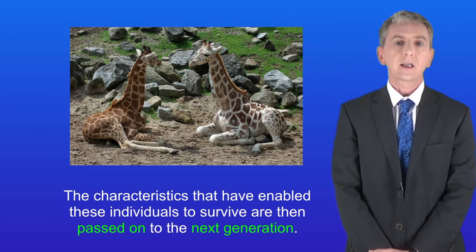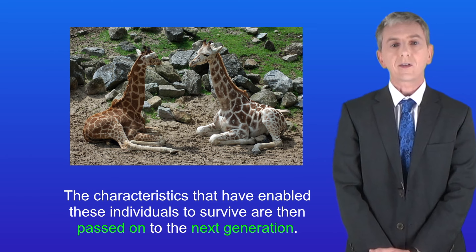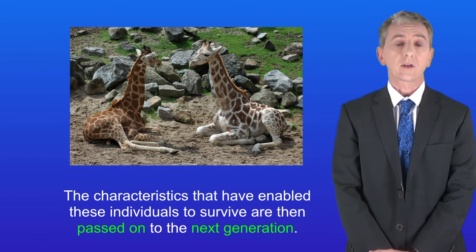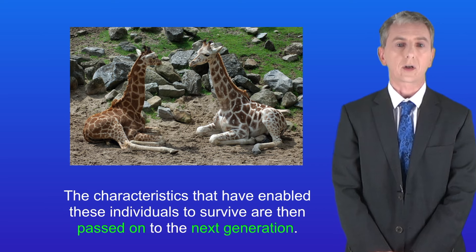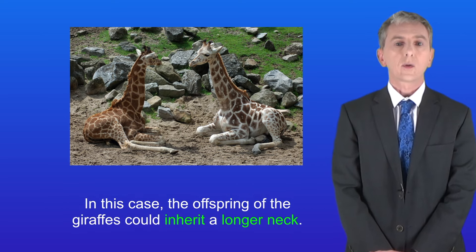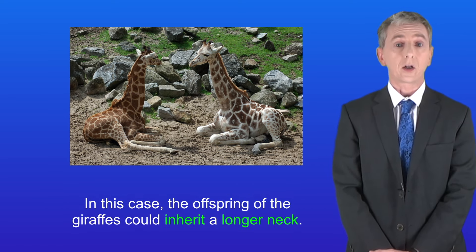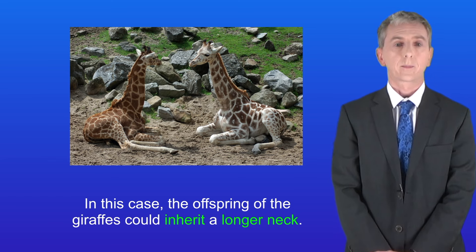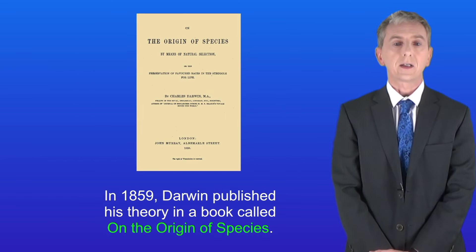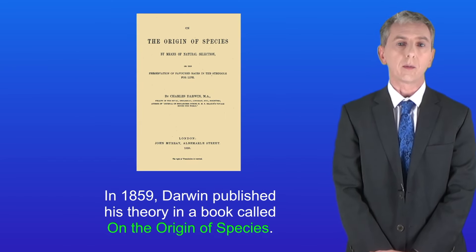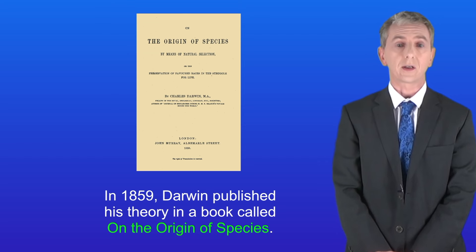And lastly, the characteristics that have enabled these individuals to survive are then passed on to the next generation. So in this case the offspring of the giraffes could inherit a longer neck. In 1859, Darwin published his theory in a book called On the Origin of Species.